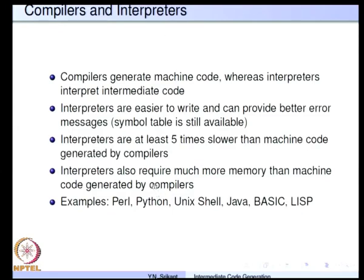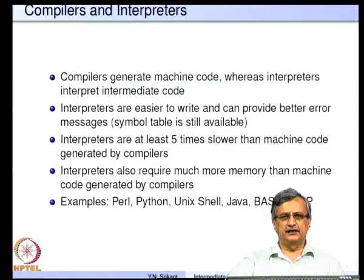Let us see the other uses for intermediate code in interpreters. What is the difference between compilers and interpreters? Compilers generate machine code, and interpreters generate intermediate code and then they continue with that process and interpret the intermediate code as well.